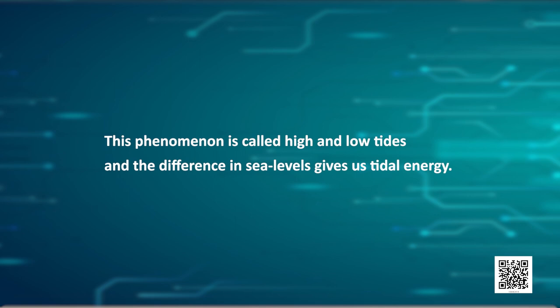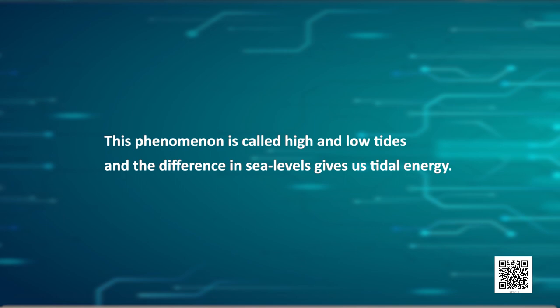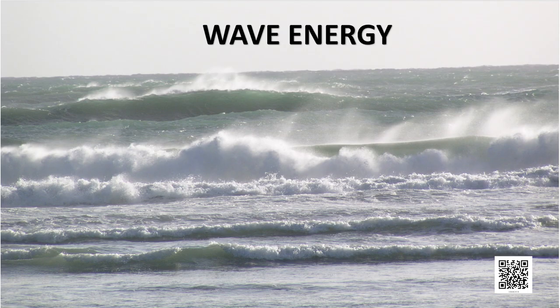The difference in sea levels gives us tidal energy. Tidal energy is harnessed by constructing a dam across a narrow opening to the sea. The turbine fixed at the opening of the dam converts tidal energy into electricity. The movement of the turbine is obtained from the high and low tides. As you can guess, the locations where such dams can be built are very limited. Let's talk about wave energy now.